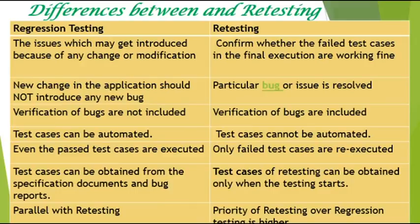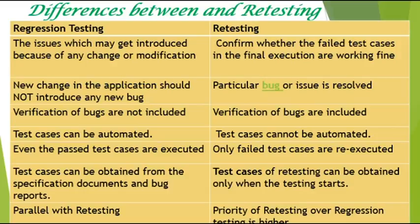In regression testing we are not verifying the bug, but in retesting we are verifying the bug. Regression testing has a regression test suite where test cases are common and executed release after release — so those test cases can be automated using any automation tool. But in retesting, the test cases cannot be automated. In regression testing, past test cases are also executed, but in retesting only the failed test cases are re-executed. In regression testing, test cases can be obtained from documentation, but in retesting the test cases can be obtained only when testing starts.